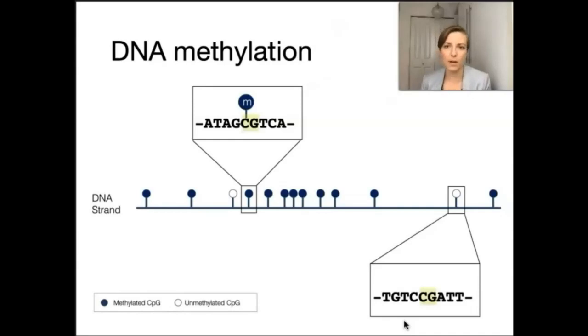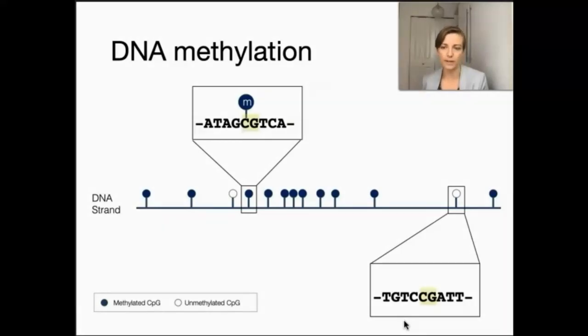In mammals, this almost exclusively occurs at what are called CpGs, which are just Cs immediately followed by Gs, or guanines.